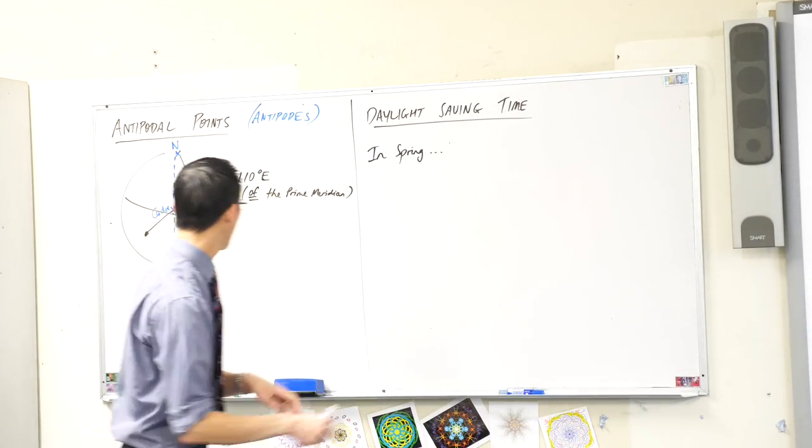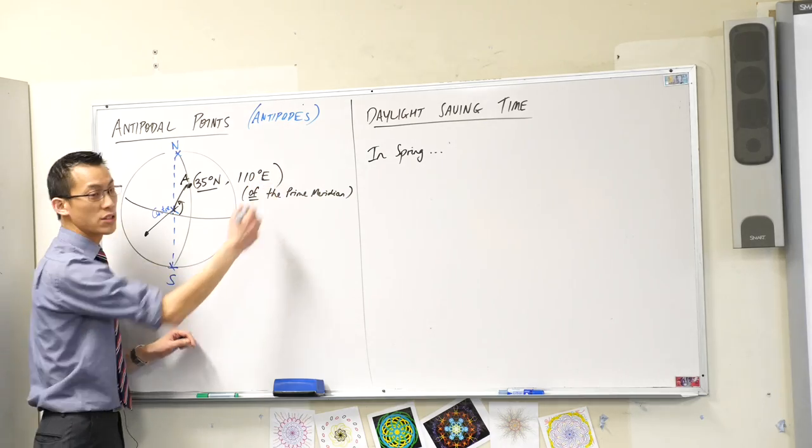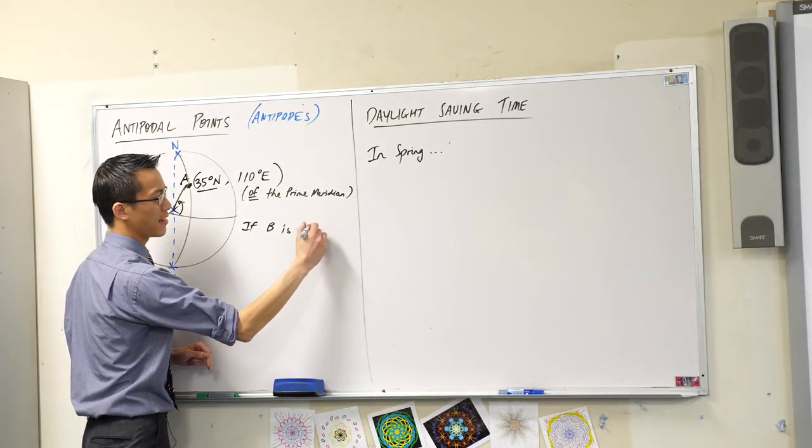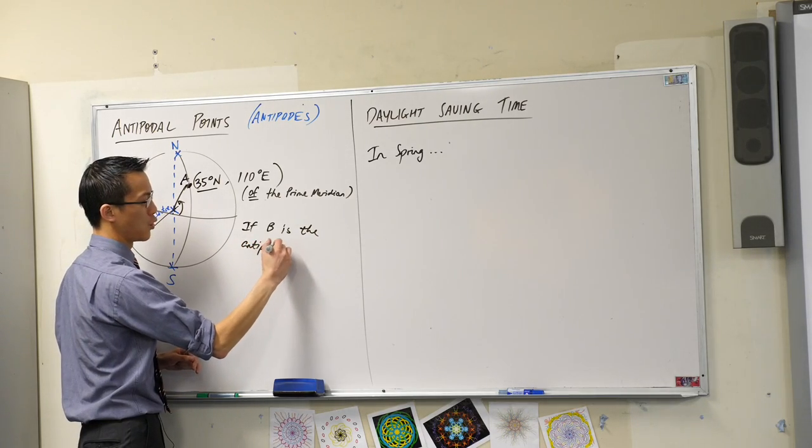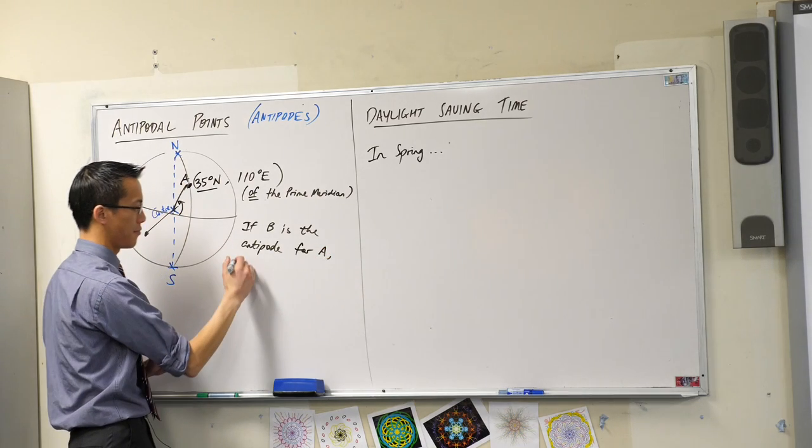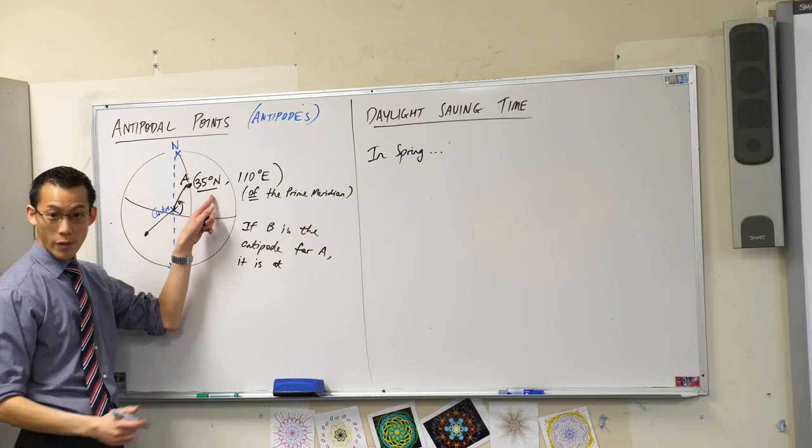Okay, so let's experiment with this. We're suggesting if this is A, let's call that A, if B is the antipode or the antipodal point for A, it is at, we already worked out, you're going to go down that way, so 35 degrees south.